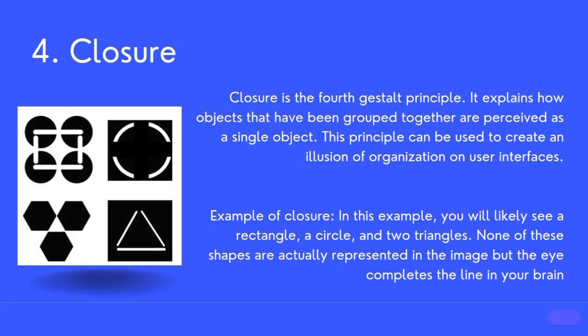Closure is the fourth Gestalt principle. It explains how objects that have been grouped together are perceived as a single object. This principle can be used to create an illusion of organization on user interfaces. In this example, you will likely see a rectangle, a circle, and two triangles. None of these shapes are actually represented in the image, but the eye completes the line in your brain.